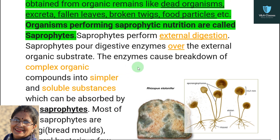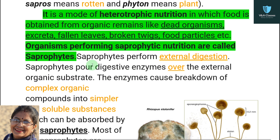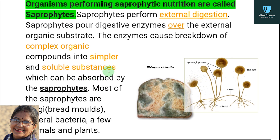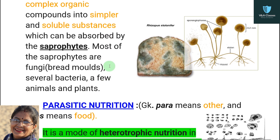When saprophytes perform external digestion, they release their digestive enzymes onto the organic substrate — dead organisms, excreta, and similar matter. These enzymes convert complex organic compounds into simpler, soluble substances, which the organism then absorbs. Most saprophytes are fungi. Examples include bread molds, several bacteria, a few animals, and some plants.